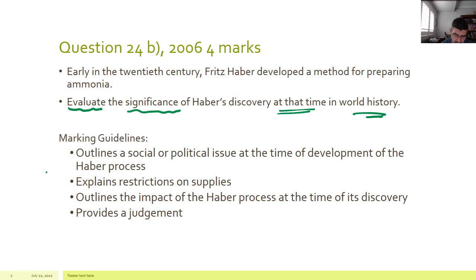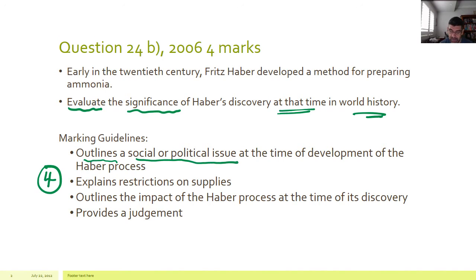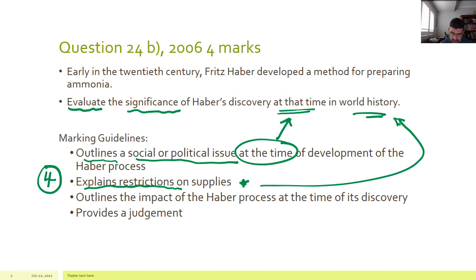This was a four-mark question and I've taken the marking guidelines from the HSC Marking Centre showing what you would have needed to do to get the full four marks. You'll notice that you have to outline a social or political issue at the time, and then explain the restriction on supplies — that links specifically to that moment in world history and why the development was so significant.